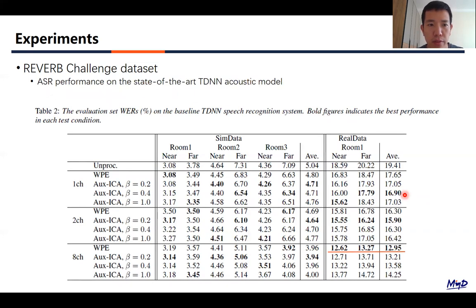We also evaluate the speech recognition performance using a state-of-the-art time-delayed neural network acoustic model. We can see that compared with the unprocessed signal, the speech dereverberation algorithms, especially in the 8-channel cases, greatly reduce the word error rate. So in the 1-channel case, the shape parameter 0.4 seems better, while in the 8-channel cases, the classical WPE algorithm performs best. The gap is very small here.